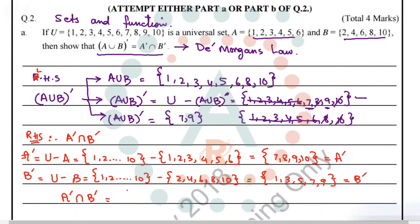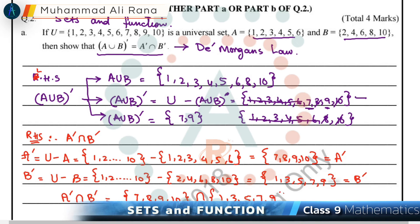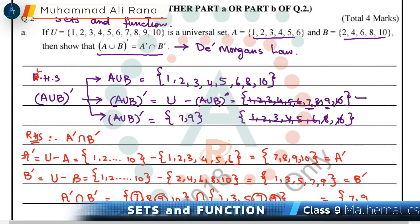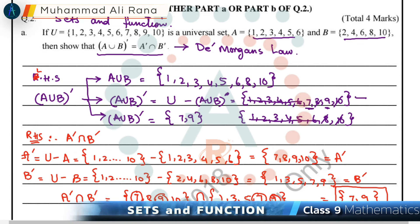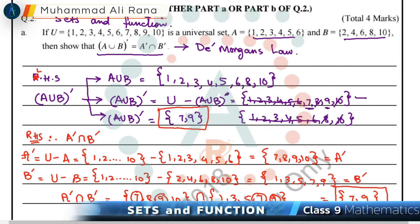Finally, we find A' ∩ B'. We have A' = {7, 8, 9, 10} and B' = {1, 3, 5, 7, 9}. The common elements between these two sets are 7 and 9, so A' ∩ B' = {7, 9}. De Morgan's Law is verified: (A∪B)' = A' ∩ B'.